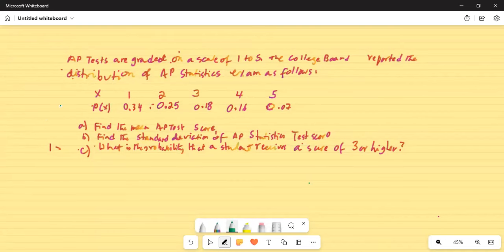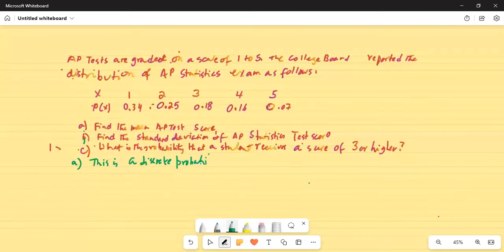So let's do part A. Part A. This is a discrete probability distribution.